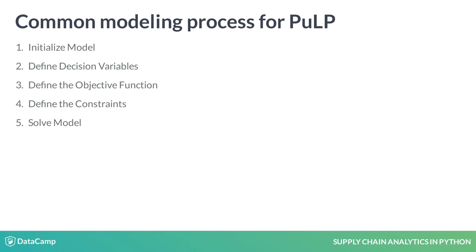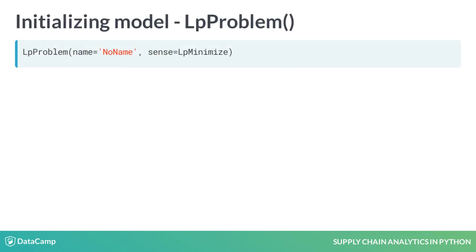To solve our example, we will model it in PULP. A common modeling process involves initializing the model, defining the decision variables, defining the objective function, defining the model constraints, and finally, we solve it. These steps should feel familiar from the lesson on LP and IP modeling. Initializing the model is the first step in the modeling process, and for that, you will use the LP problem function.